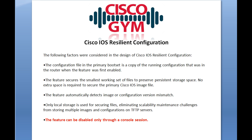This slide captures some important considerations of Cisco IOS Resilient Configuration. The configuration file in the primary boot set is a copy of the running configuration that was in the router when the feature was first enabled. When you enable the secure boot config command in global configuration mode, it takes a copy of the current running configuration at that time and secures it to your flash card. Keep in mind: this secure boot config copy is not going to change. If you do a copy run start, changes to the startup configuration are not going to be reflected in this secure copy in flash.